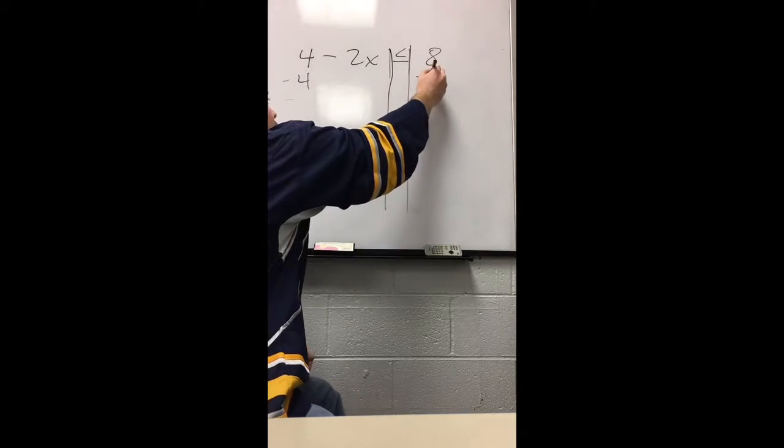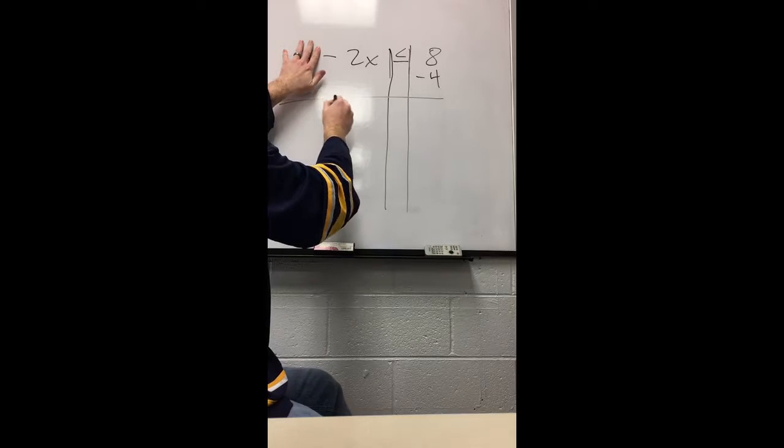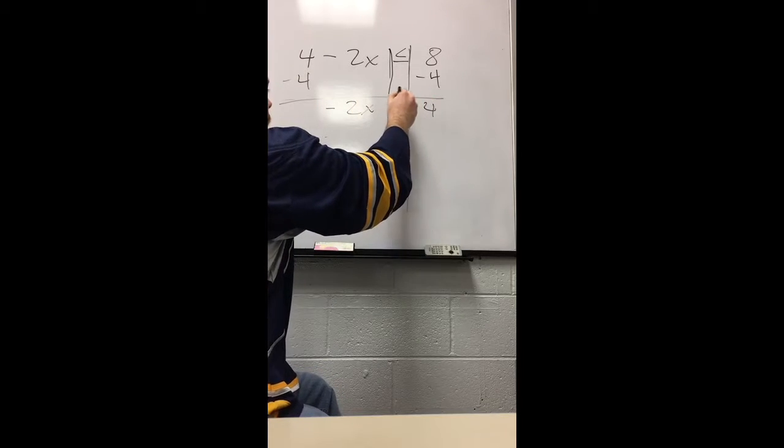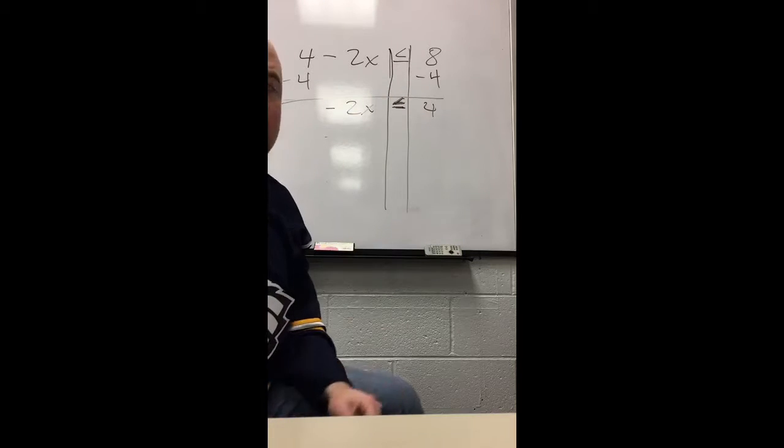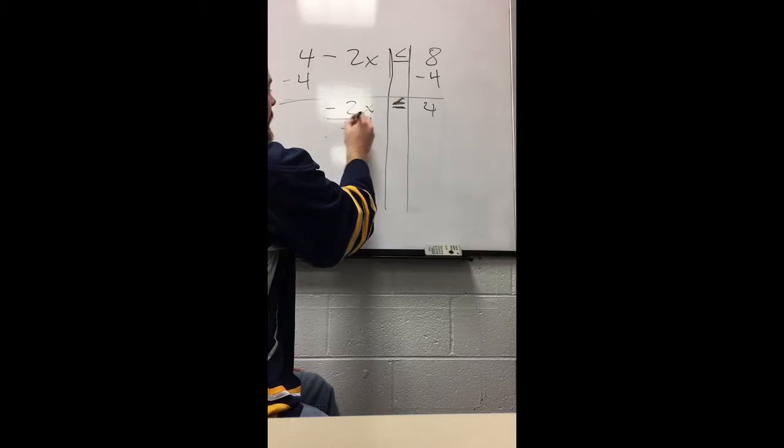There is one subtle difference here, and that is once I get rid of the constant, right, the fours go away, there's a negative 2x left. So once in this situation, what are we going to do? Divide by negative 2, right?